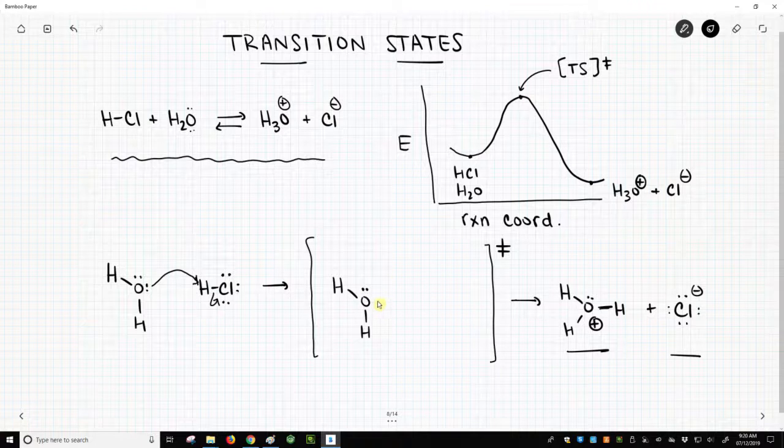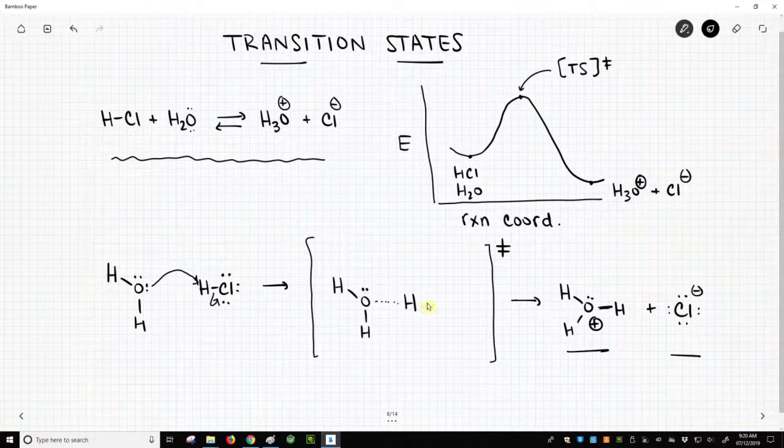So we're going to use this lone pair to make a partial bond to hydrogen, and that dotted line is meant to be a partial bond. And of course, we're going to have a partial bond to chlorine because that bond is breaking.